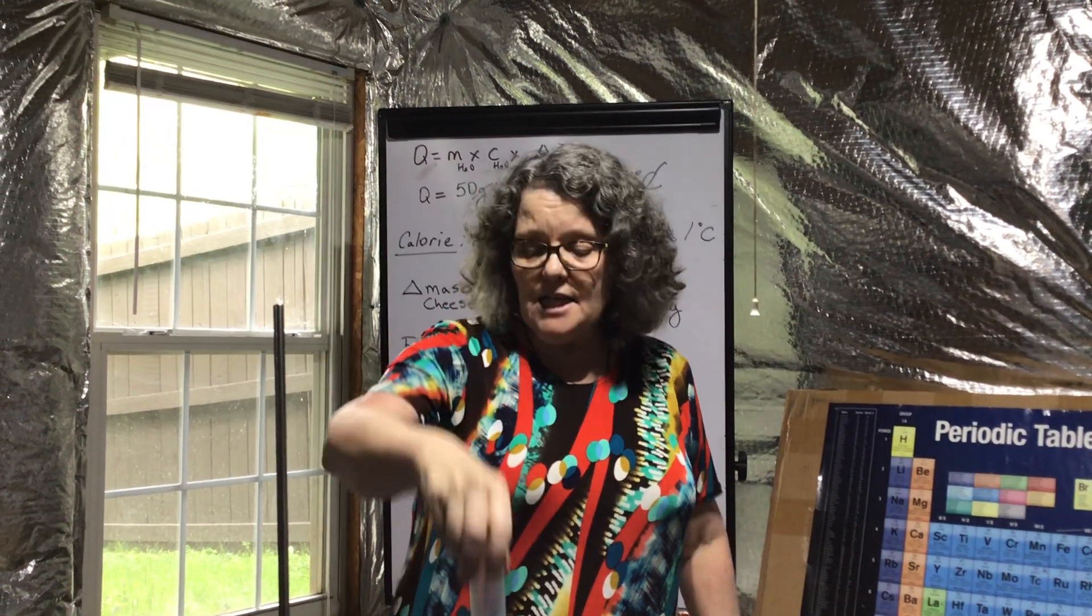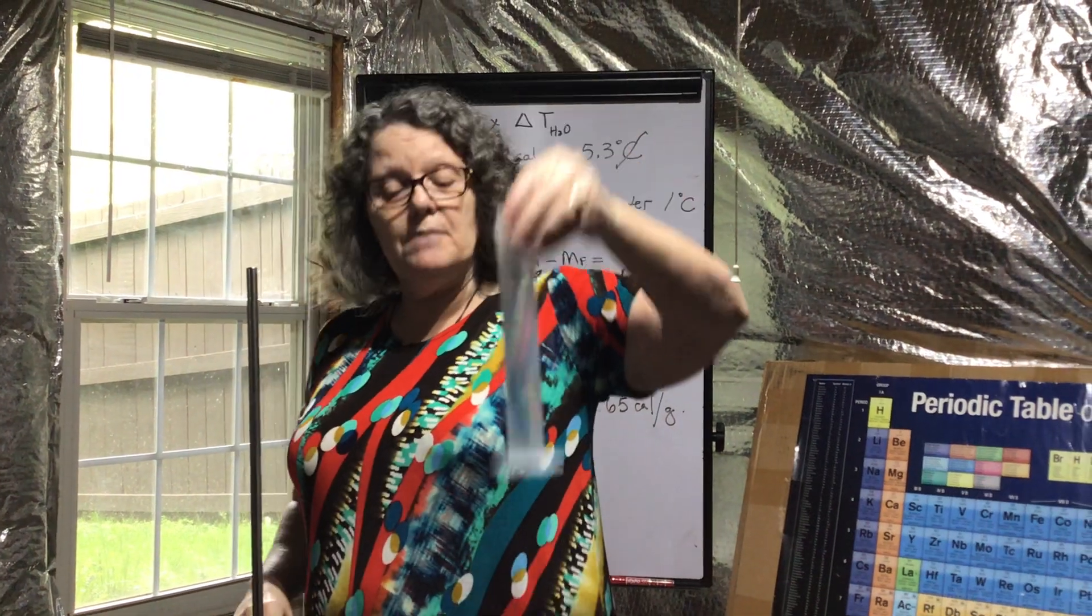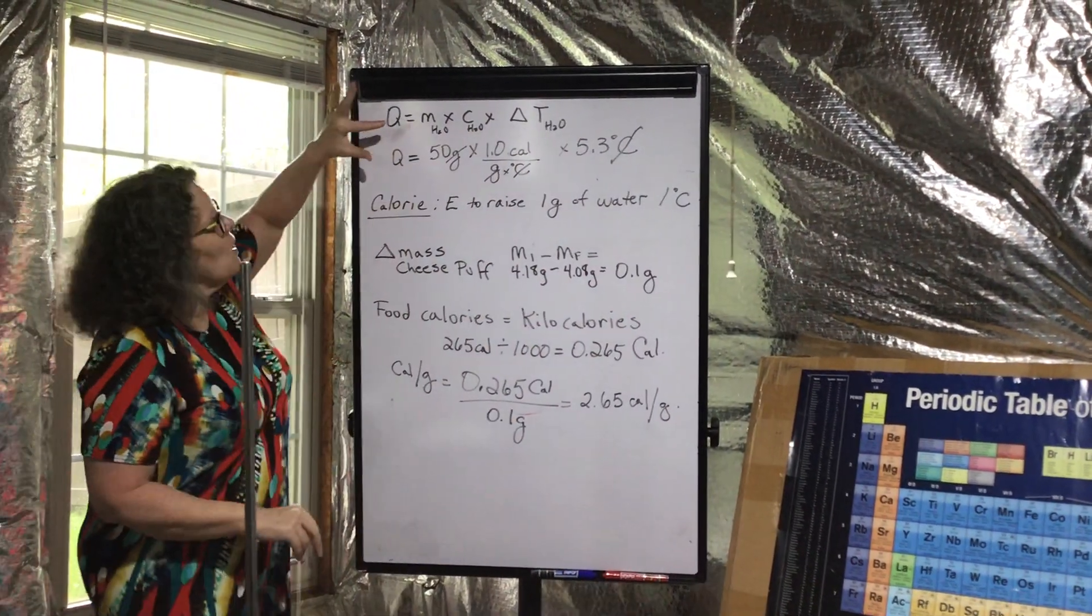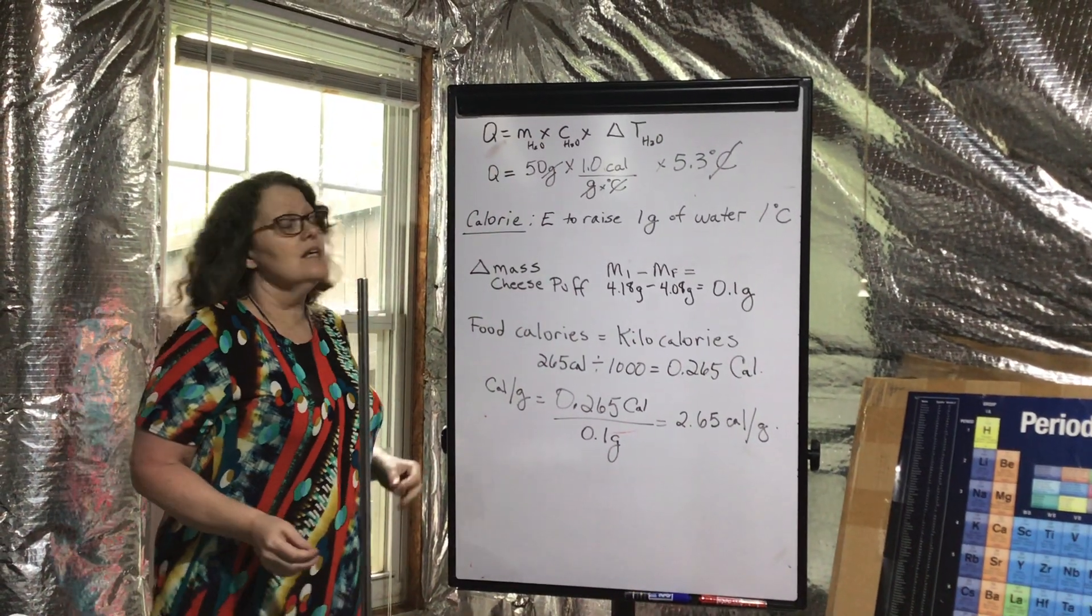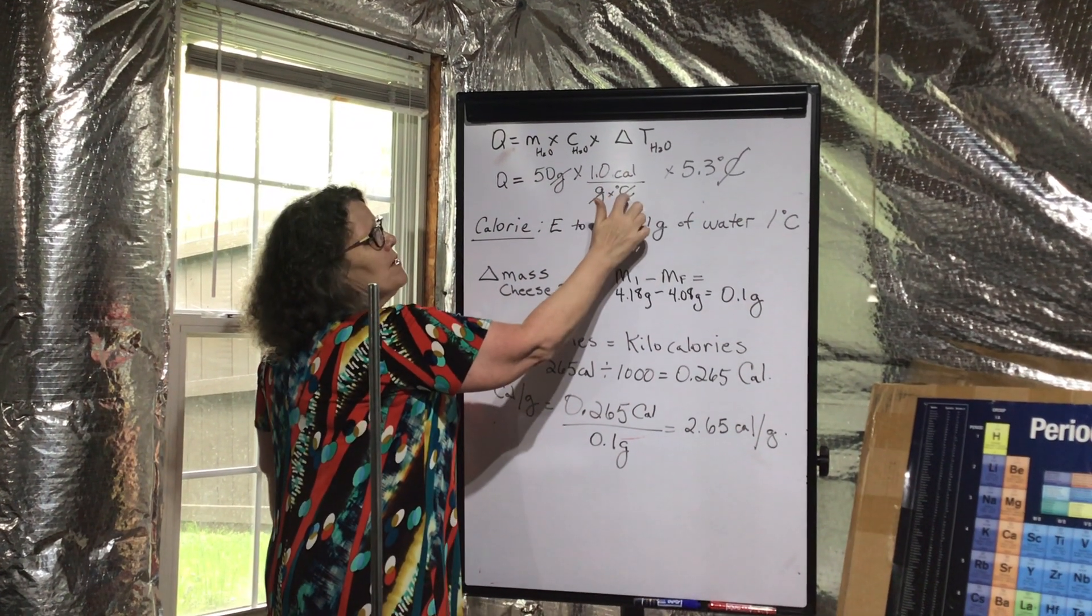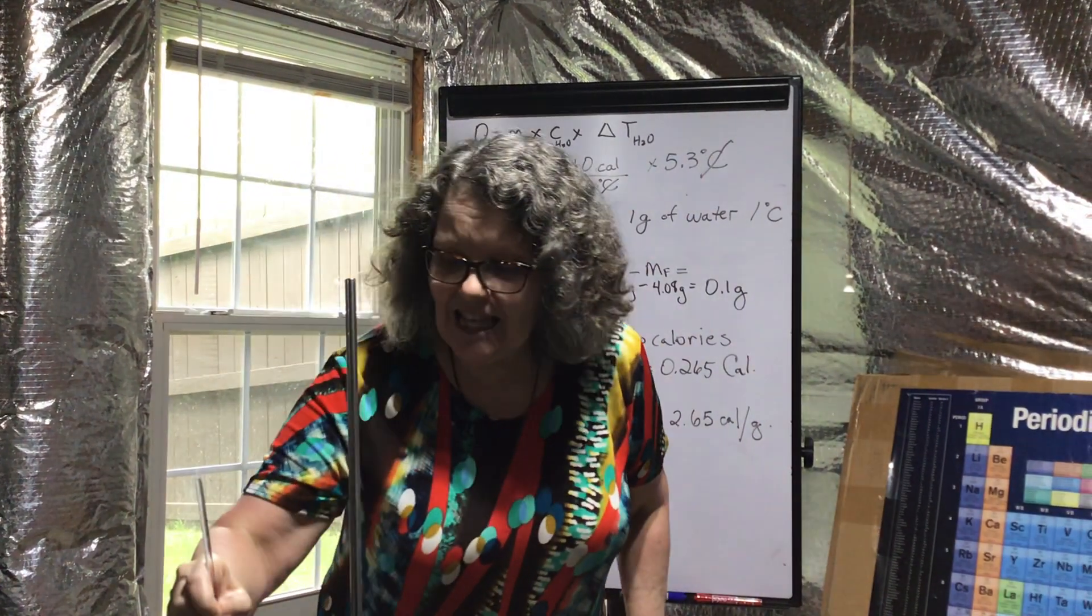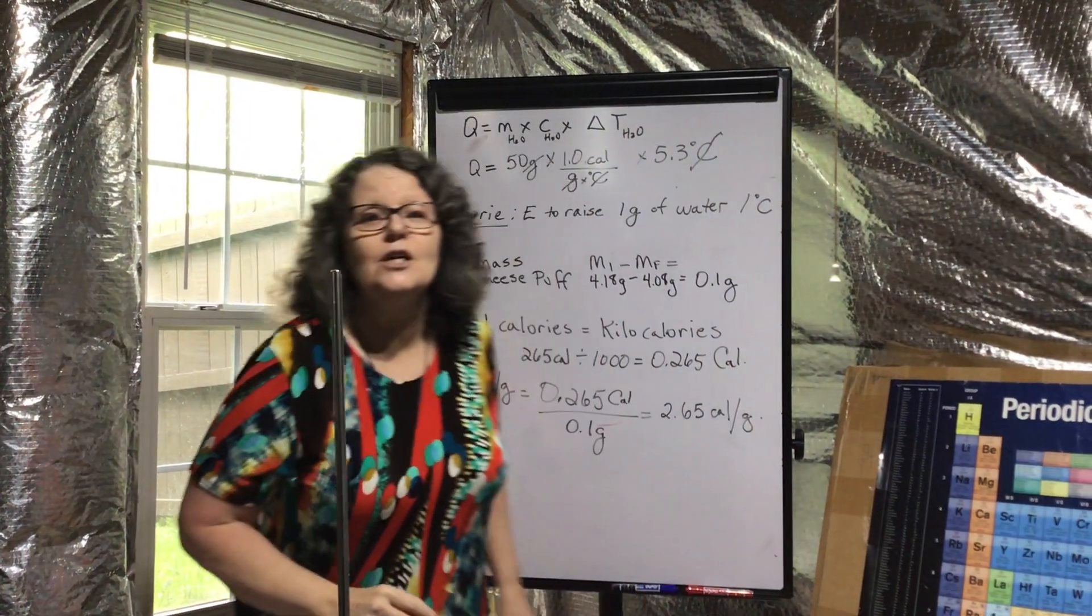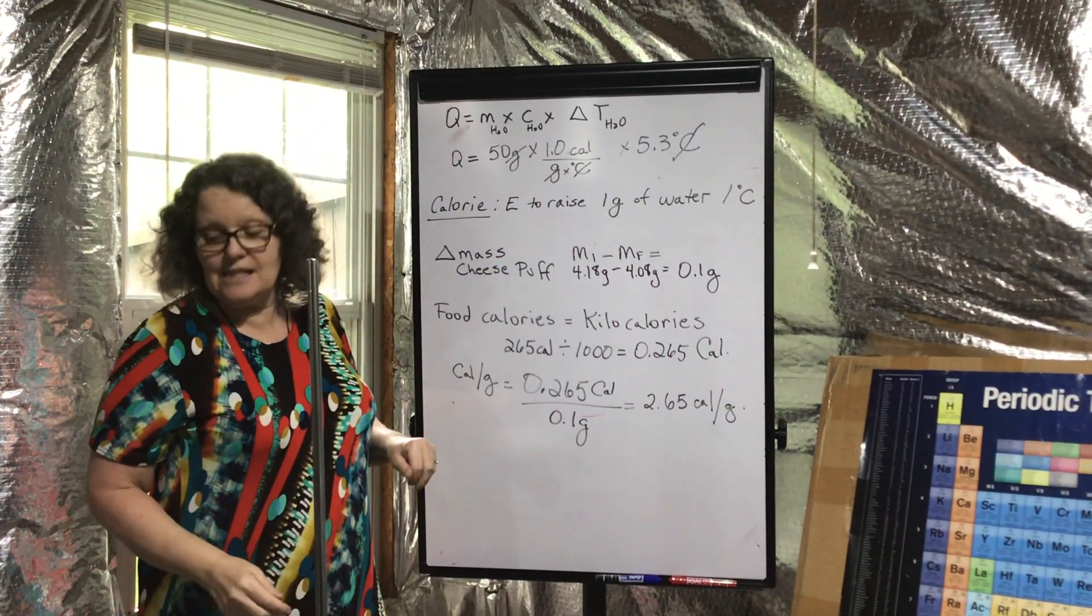Where'd you get that? We have 50 milliliters of water. The density of water is one gram per milliliter, that means 50 milliliters has a mass of 50 grams. Now c, the specific heat for water, is one calorie per gram per degree Celsius. With the sample data, the change in the temperature inside the calorimeter before and after burning the puff was 5.3 degrees Celsius.